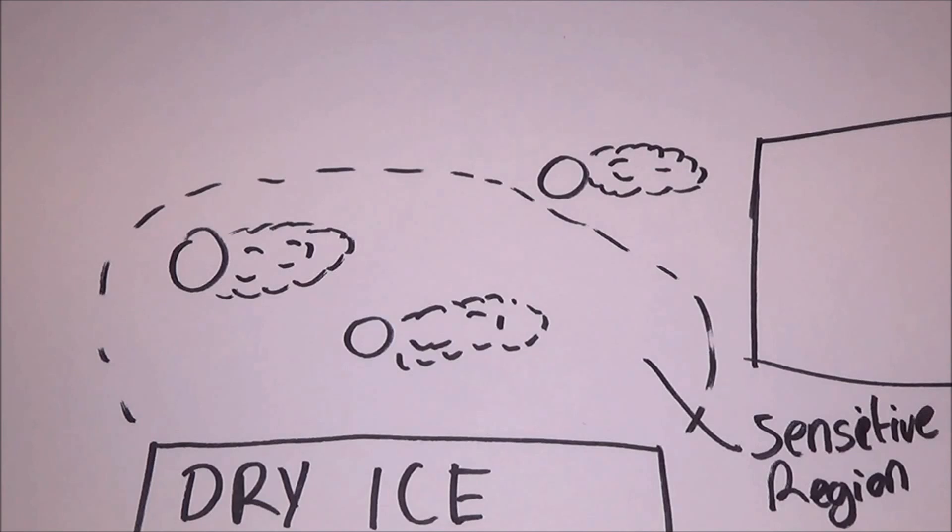Just above the dry ice there is a particularly sensitive region, in which you are much more likely to find the radioactive trails. At this height above the ice, the alcohol is not condensed yet, and so any ionized particles whizzing through are perfect to trigger condensation.